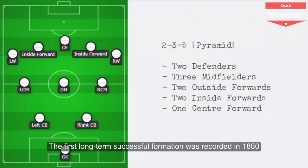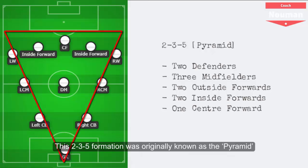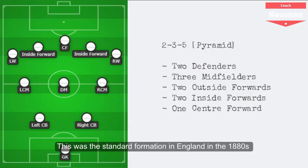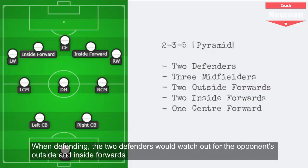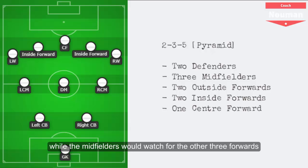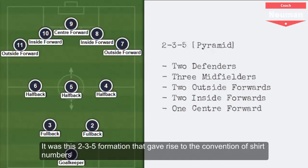The first long-term successful formation was recorded in 1880. The 2-3-5 formation was originally known as the Pyramid. This was the standard formation in England in the 1880s and by 1890 it was used by many other countries as well. Most top level teams kept using this formation until the 1940s. For the first time, a balance between attacking and defending was found. When defending, the two defenders would watch out for the opponent's outside and inside forwards while the midfielders would watch for the other three forwards. It was this 2-3-5 formation that gave rise to the convention of shirt numbers.